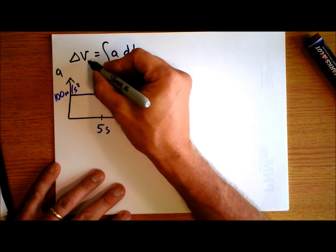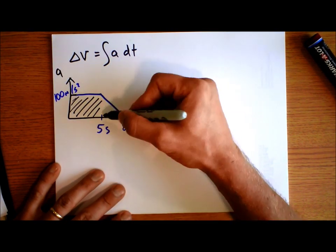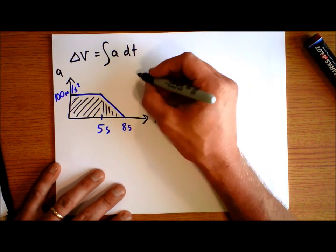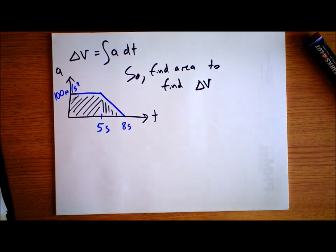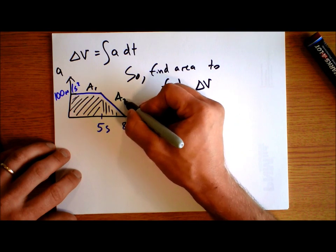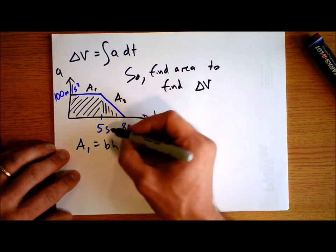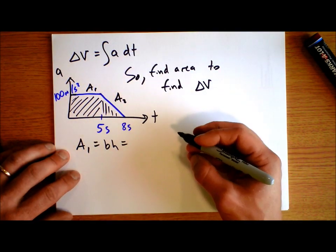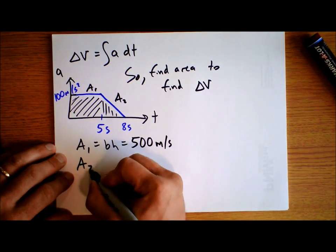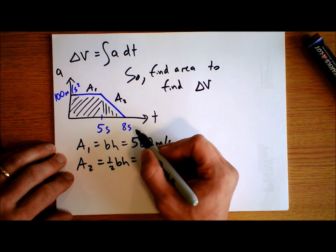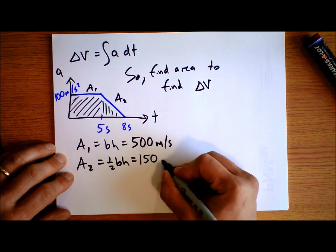Since the change in velocity is the integral of the acceleration over time, all we have to do is find the area. I'll split this into two areas. Area 1 is base times height: 5 seconds times 100 meters per second squared gives 500 meters per second. Area 2 is one-half base times height: one-half times 3 seconds times 100 gives 150 meters per second.